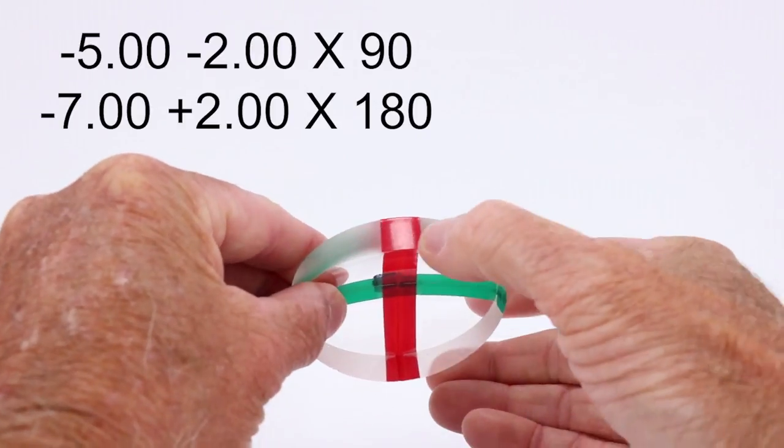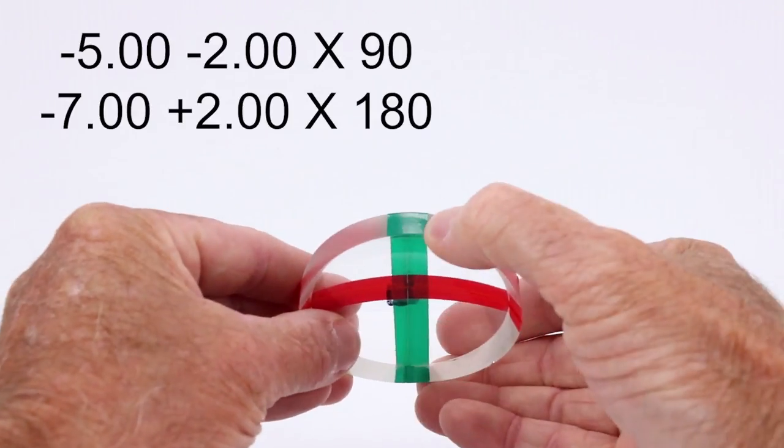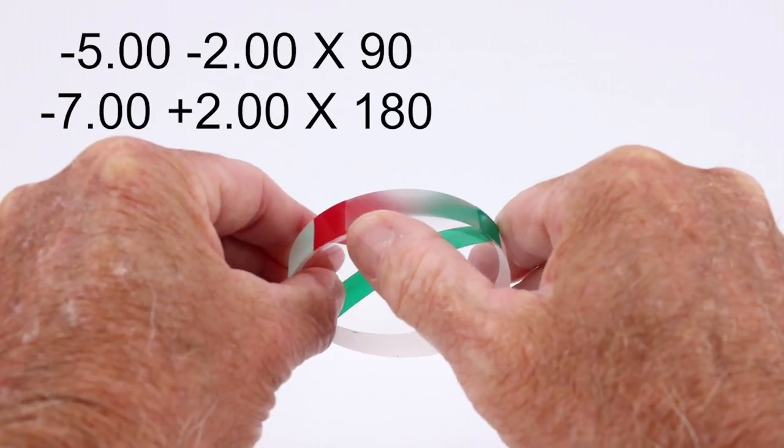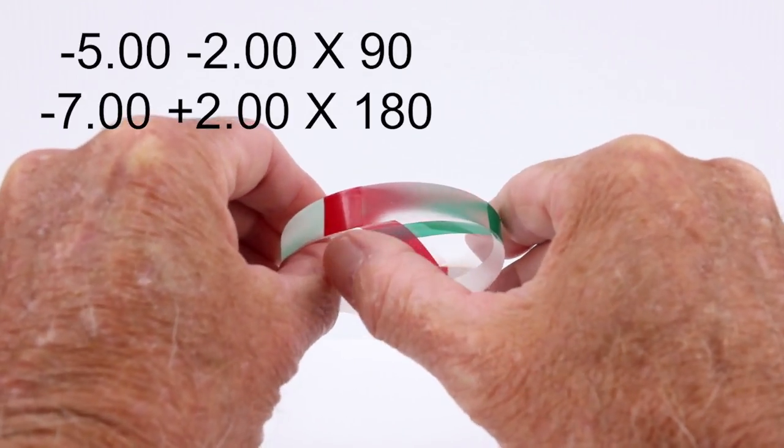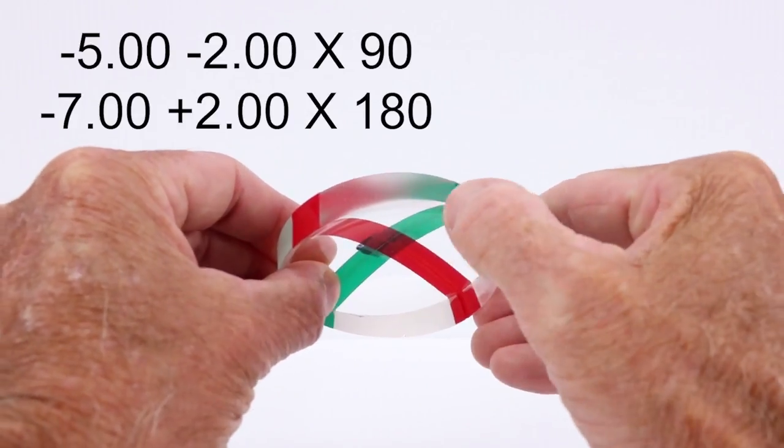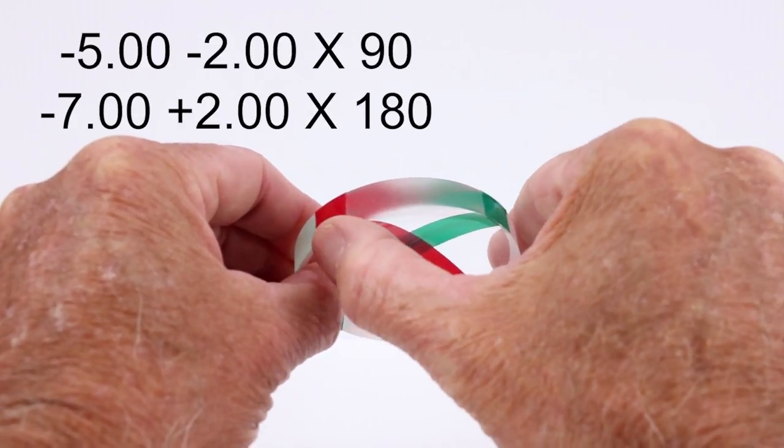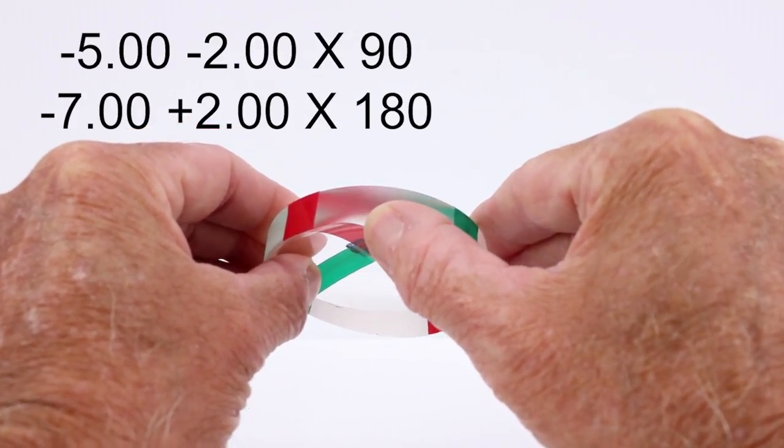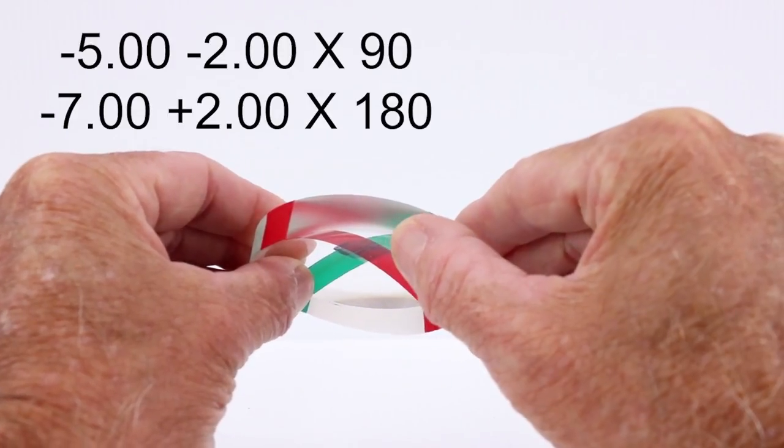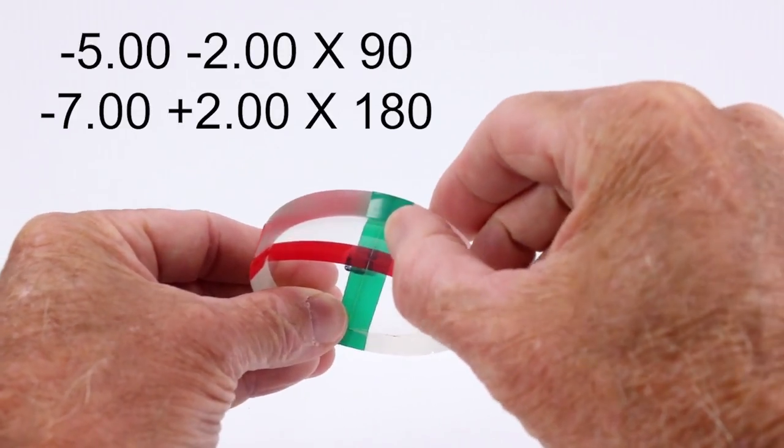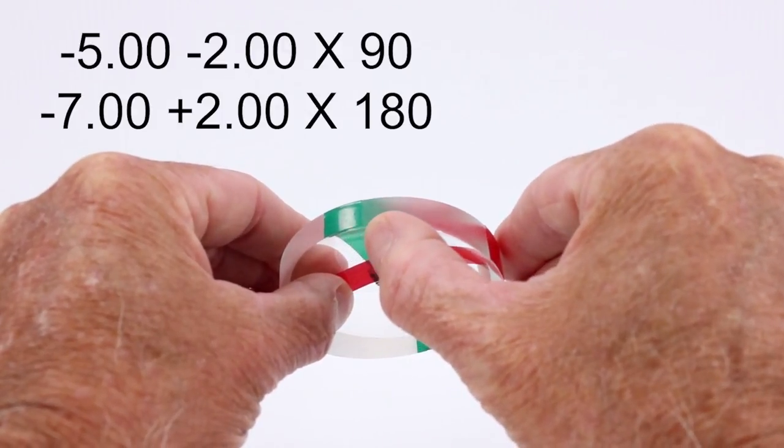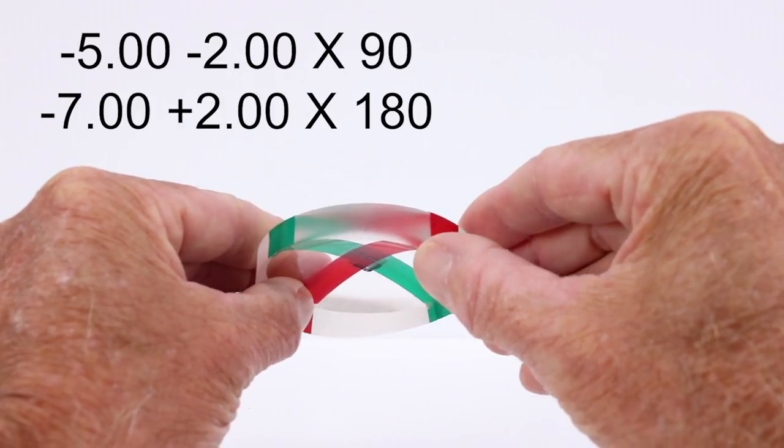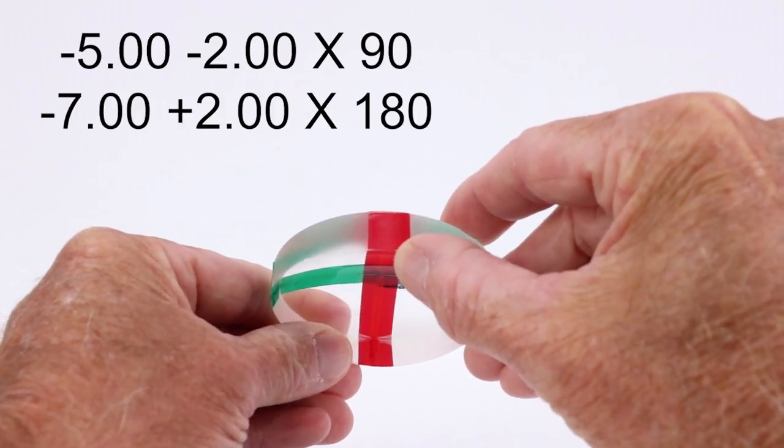This lens will never be more powerful than the minus 7.00, or less powerful than the minus 5.00. You can see, you can feel the difference between these two points, which will always be 90 degrees away from each other. Here's my 7.00. It is the thickest point. I can take my finger, quite literally run it down. You can visualize it, feel it, see it, to where my minus 5.00 is. From that minus 5.00, I would again start building up in power, in thickness, reducing the radius of curvature till I reached my minus 7.00.